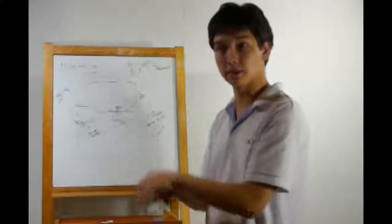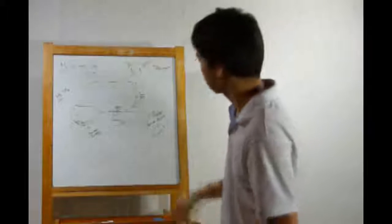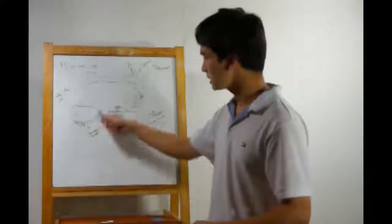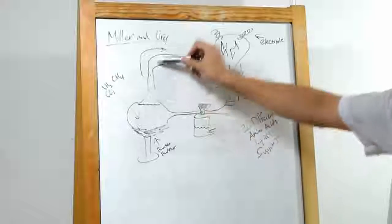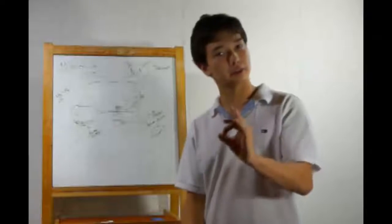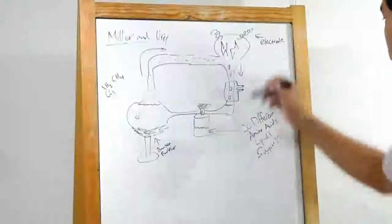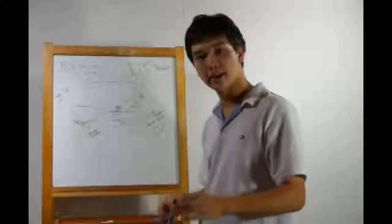Volcanoes erupting, lightning storms, lots of good stuff. And that's all right here. We have a Bunsen burner heating the original primordial soup, if you will, and it would then evaporate and head into this chamber. Electrodes would shock it, simulating lightning storms. Then it would condense back into its side, and every so often we'd collect a few samples.